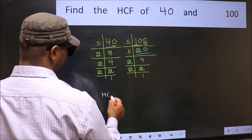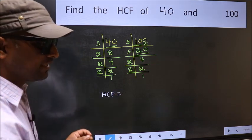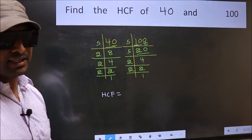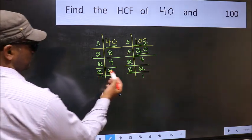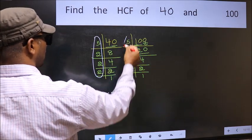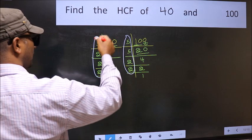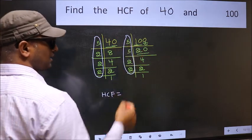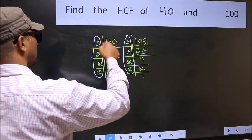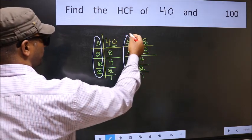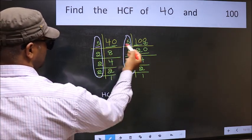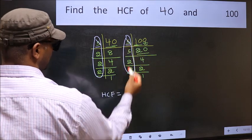Therefore, our HCF is the product of the numbers which should be present in these two places—that is, here and also here. Here and here. So now let us find the numbers which should be present here and here. Starting with the number 5. Do we have 5 here? Yes. So cut 5 right here.